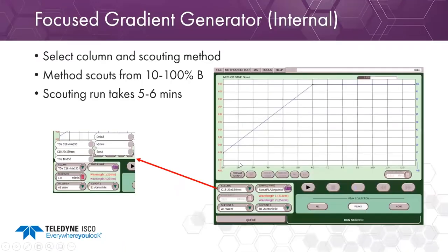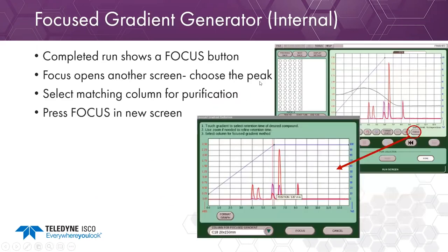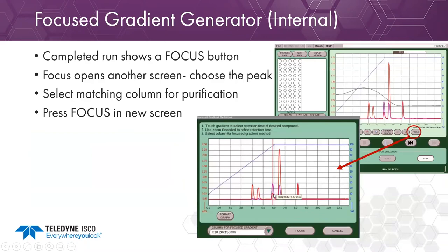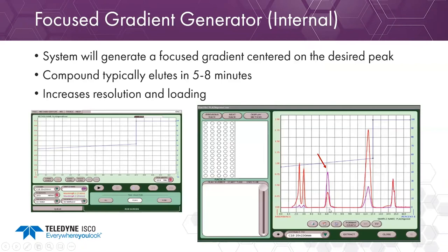Our software has a way around that. You basically pick the column you want to run, run a very steep gradient, and wash everything off — done simply by programming the software to run a scout run. When you run the scout run, you run a gradient, pick your focus button, and choose the peak of interest. The software takes that very steep gradient and turns it into a shallow gradient so you can actually isolate your compounds. We go from having a very short resolution between two compounds to having truckloads of separation, and we can load this up way more than you would with a standard 5 to 95% gradient.